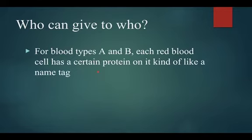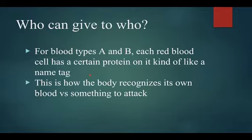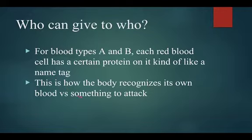For blood types A and B, each red blood cell has a certain protein on it that acts like a name tag — it kind of sticks off the side of the red blood cell. This is how the body recognizes its own blood versus something to attack. Your immune system's white blood cells wander around; when one bumps into your own red blood cell, it recognizes that name tag, so it's fine. But if something gets in there, like bacteria or viruses, your immune system knows to attack it.